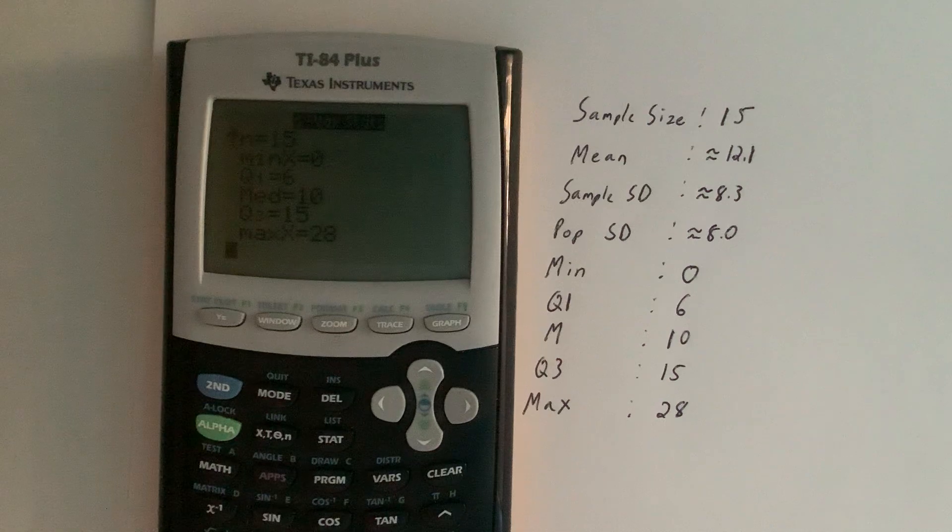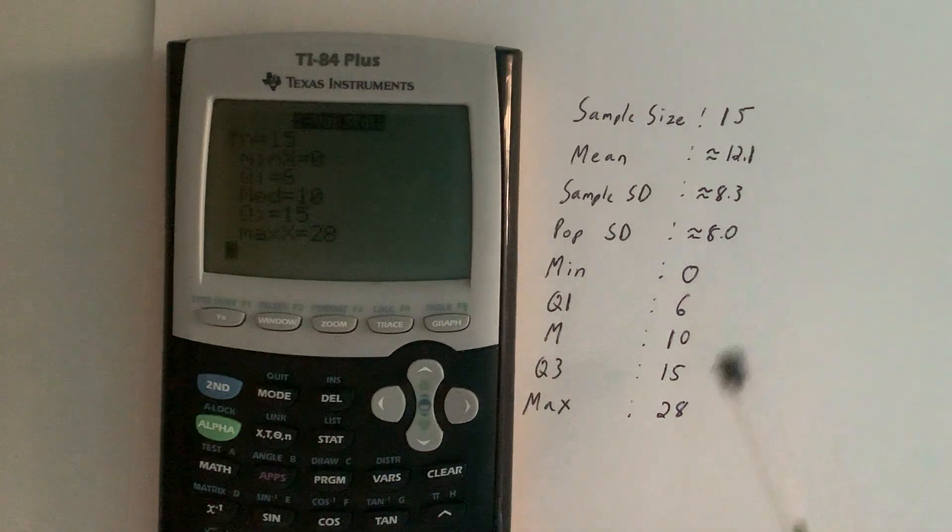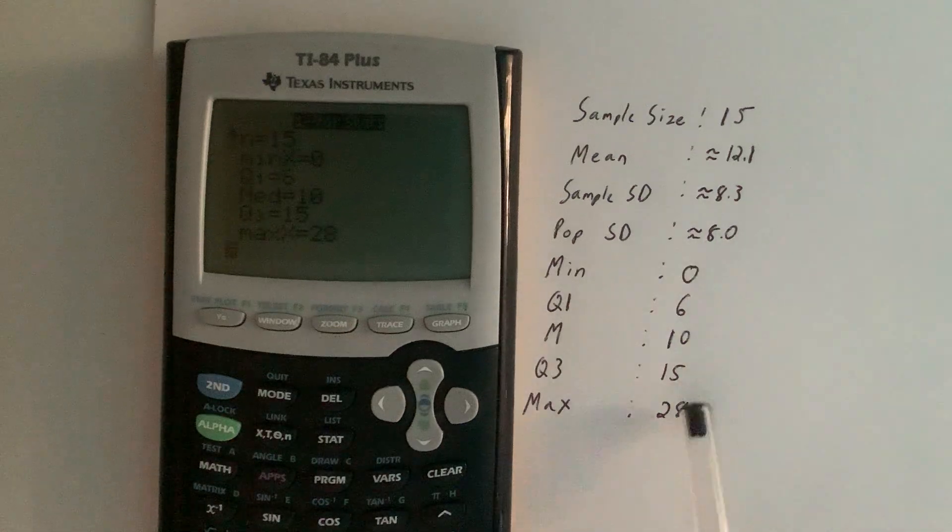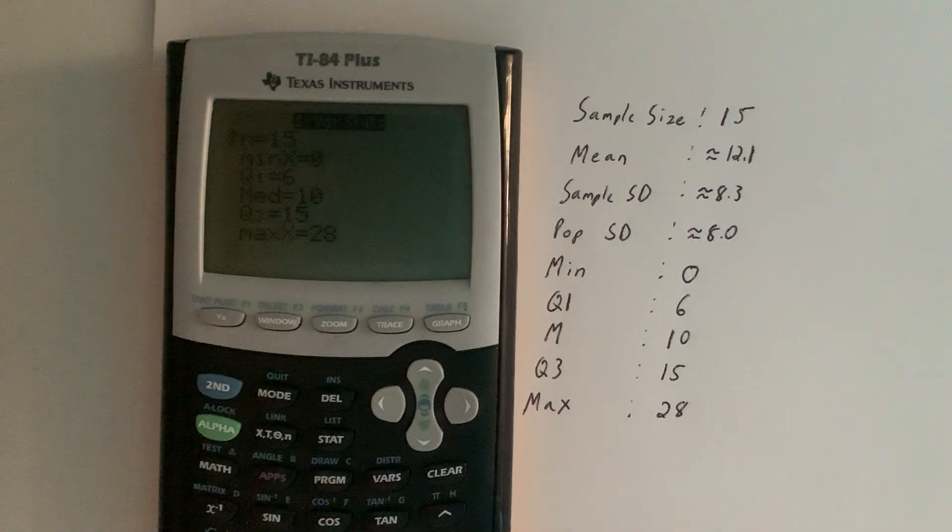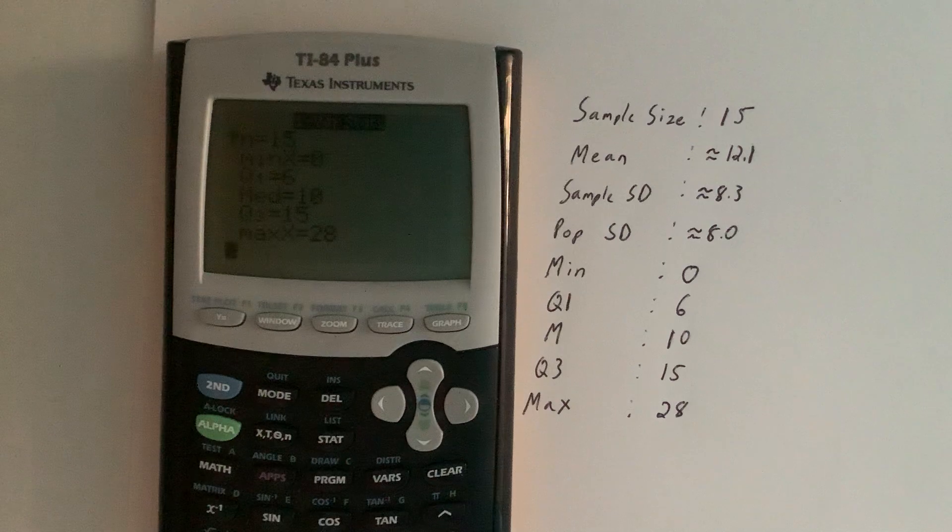Do we need the calculator for all these? No. Minimum and maximum, we should probably be able to just look at our data and find the smallest number and the largest number, but the calculator does it for us as well. Things like the median, we talked about how to do those manually, but now you also know how to use your calculator to do so.